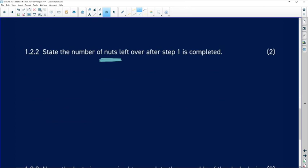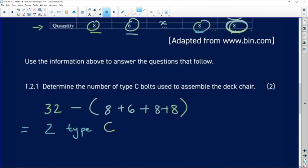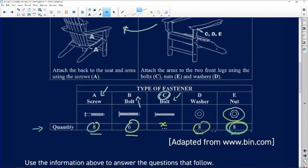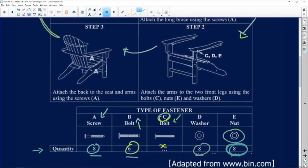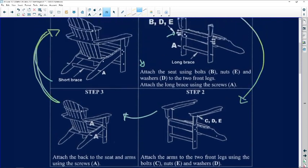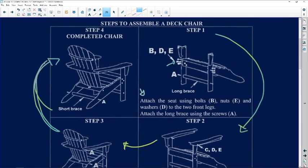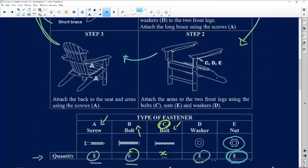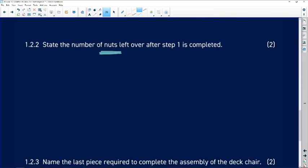So after step one, that's going to be one, two, three, four, five, and six. So that's eight minus six. So if I've got eight in total and I use up six of them, then I'll have two left.